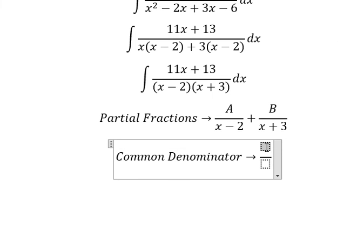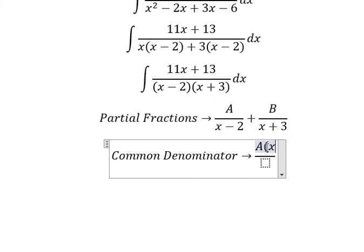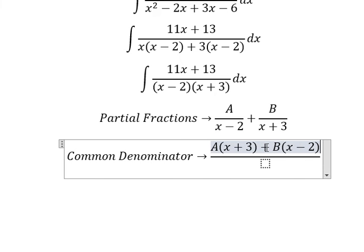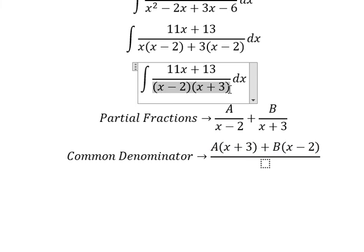We have capital A multiplied by (x+3) plus capital B multiplied by (x-2), with the same denominator (x-2)(x+3).